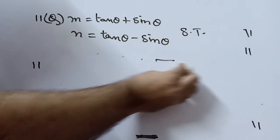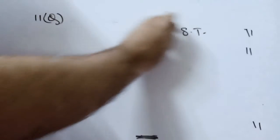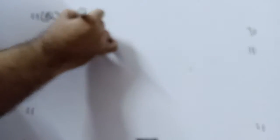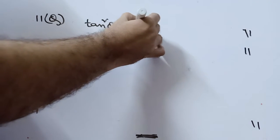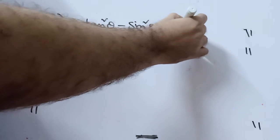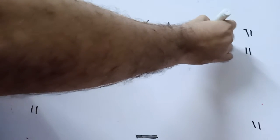We can clear this. The key to eliminate theta is to use the identity: tan square theta minus sin square theta is equal to tan square theta into sin square theta.